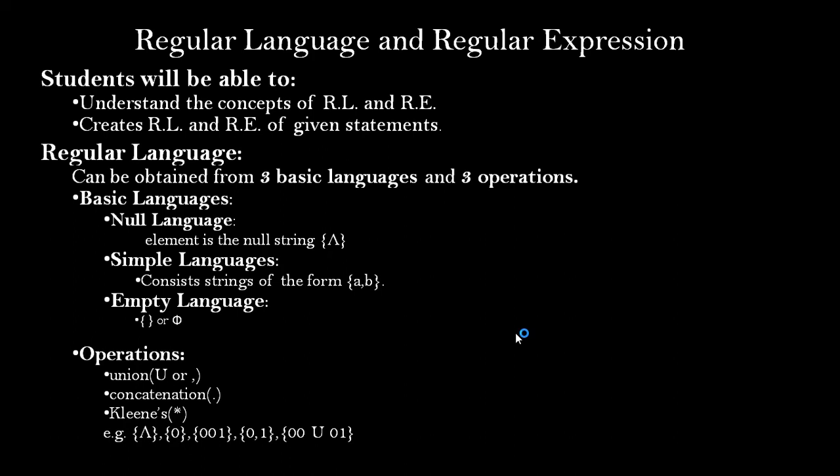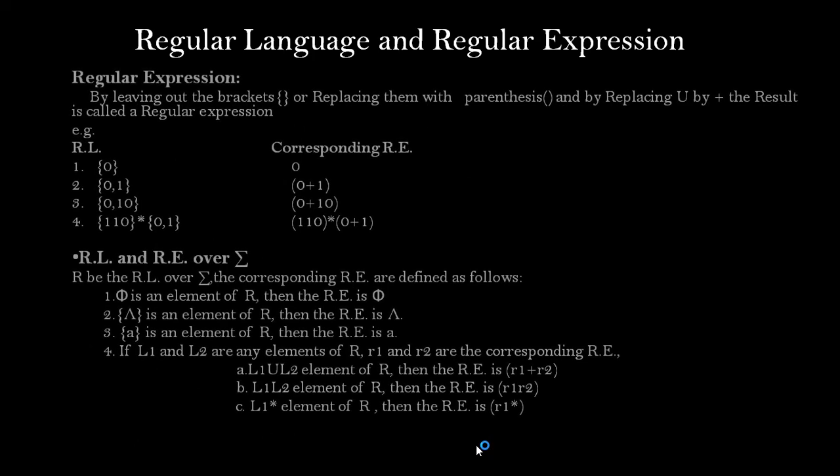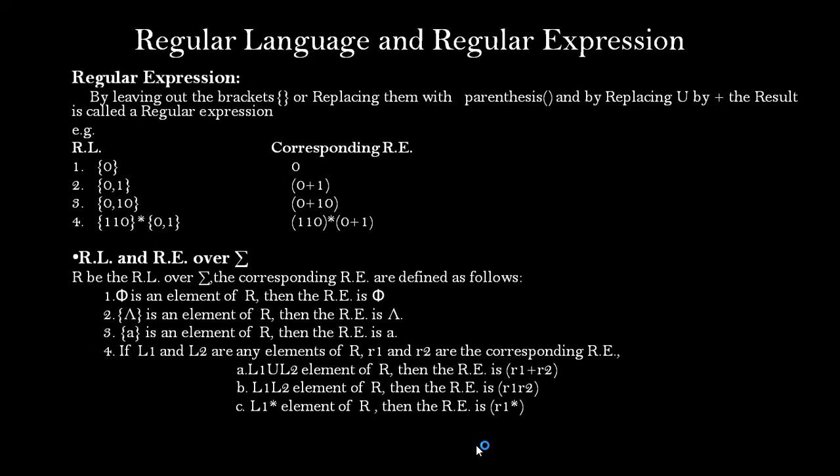The second part of a regular language is three operations. The first operation is union, the second is concatenation — both are binary operations requiring two regular languages. The third operation is the Kleene star (or claims operation), which requires only a single regular language and represents repetitive calling of strings.